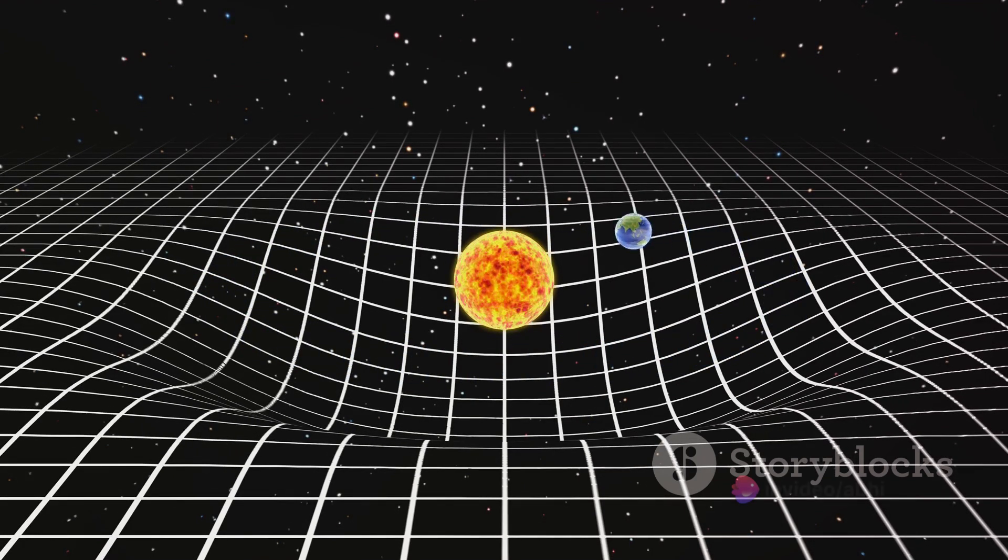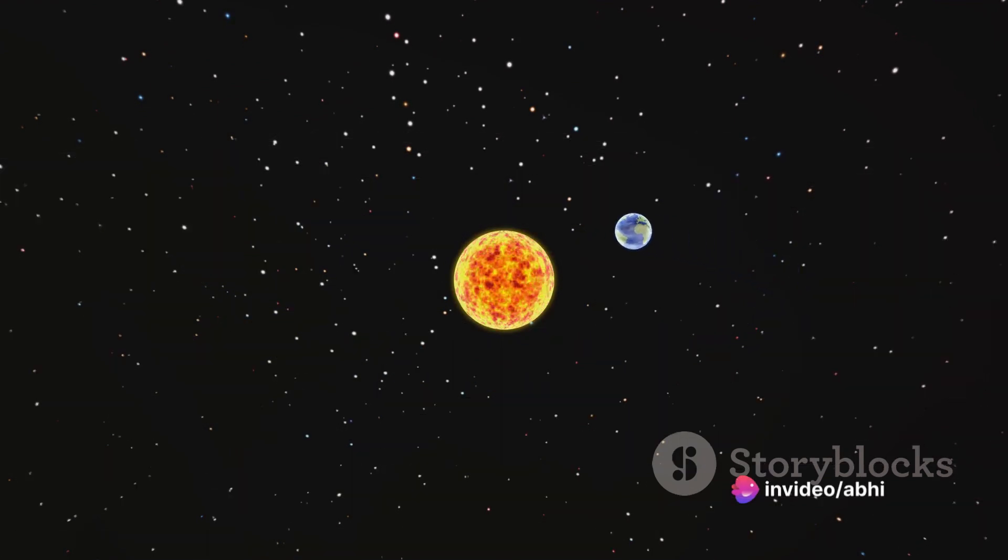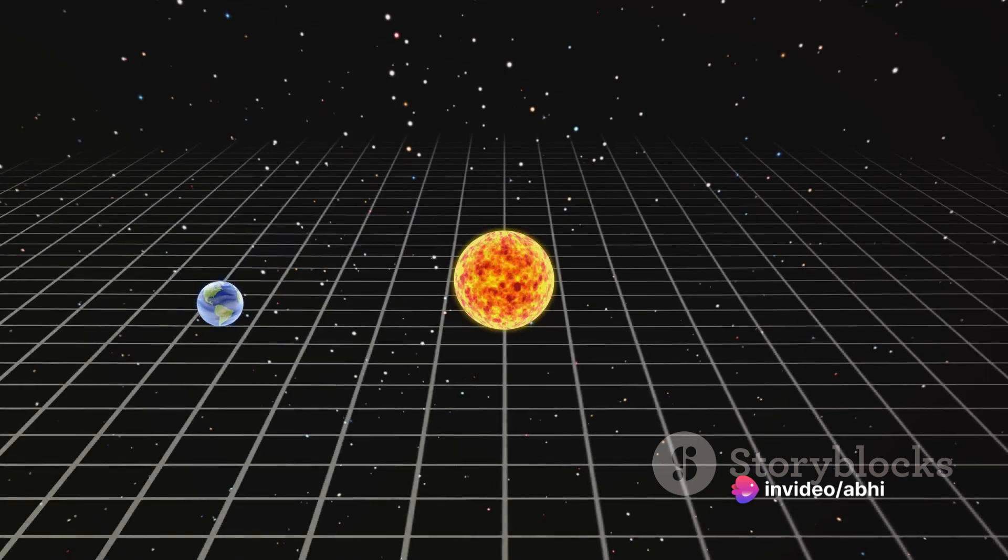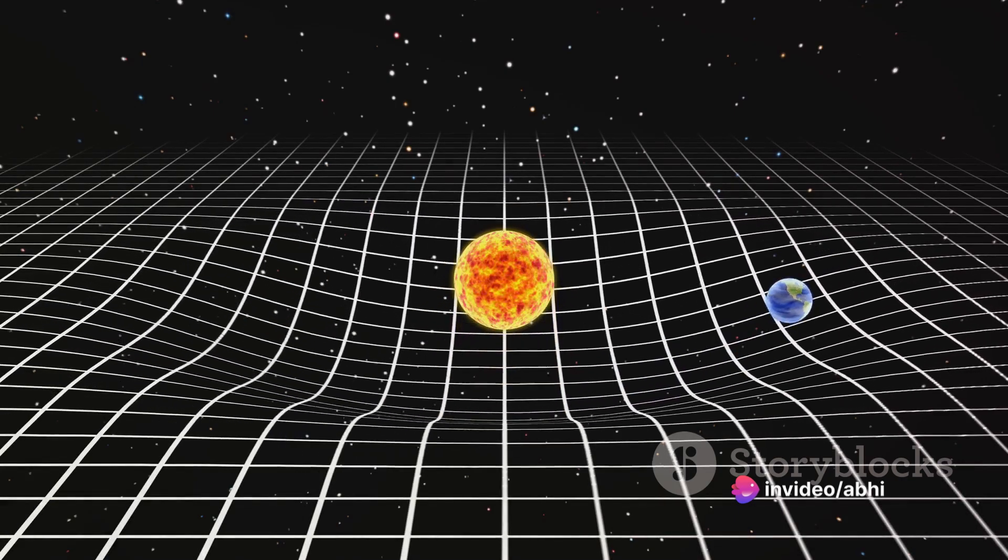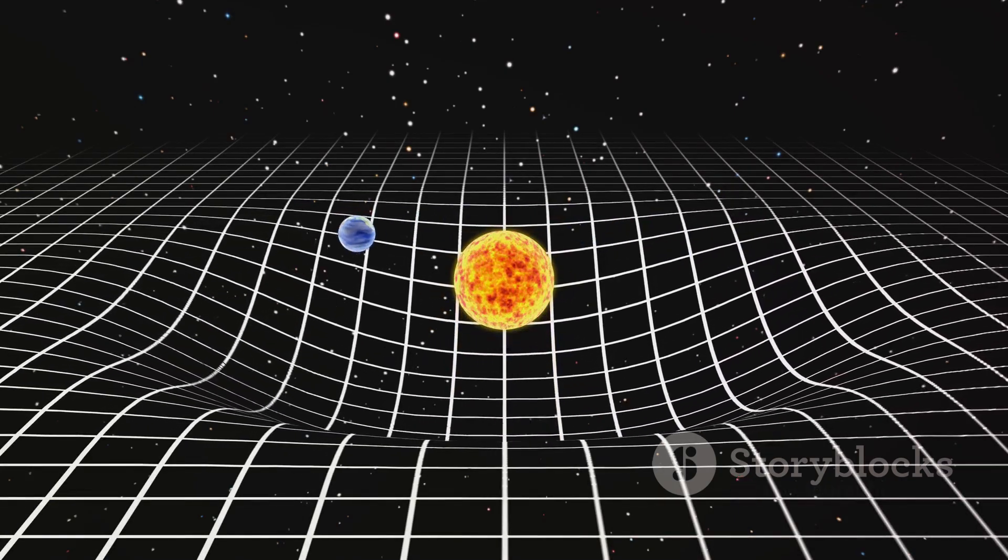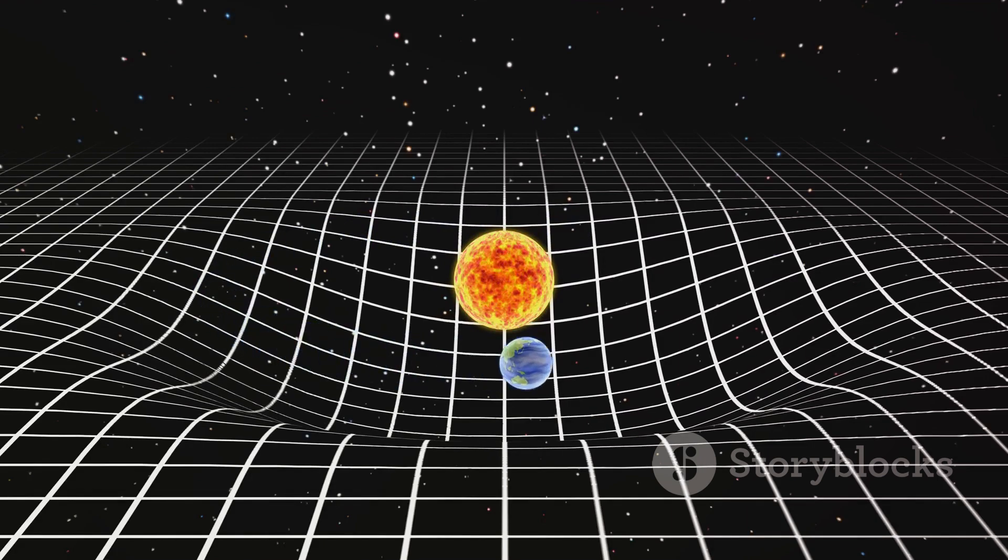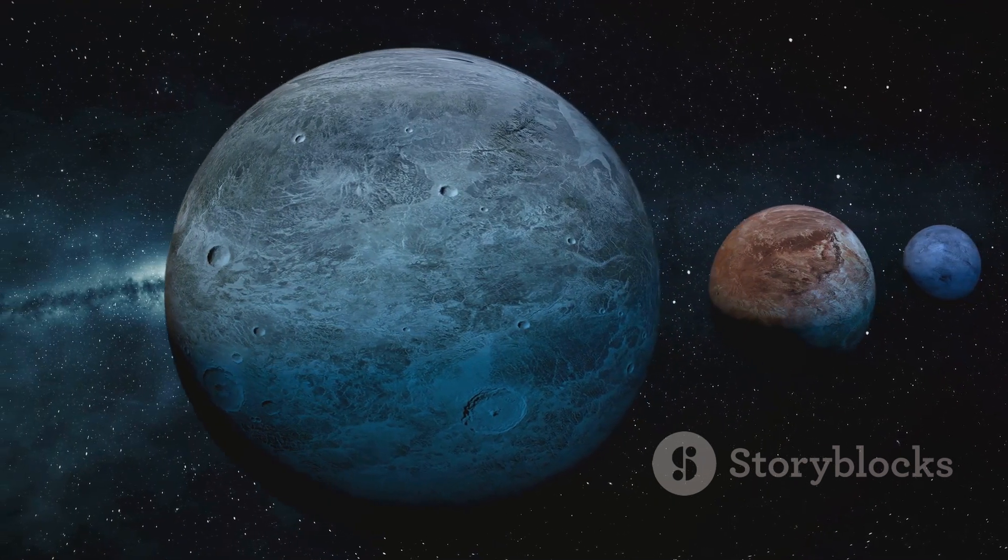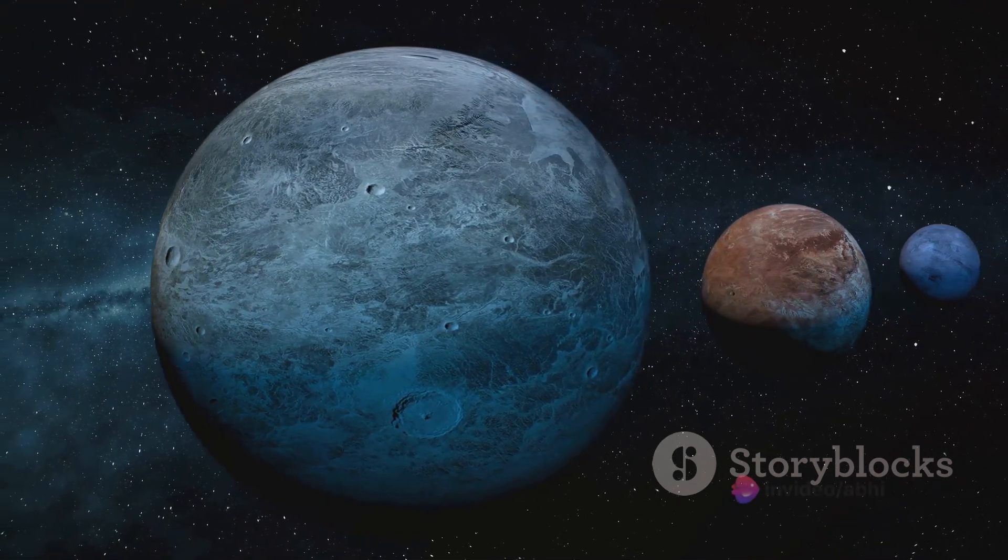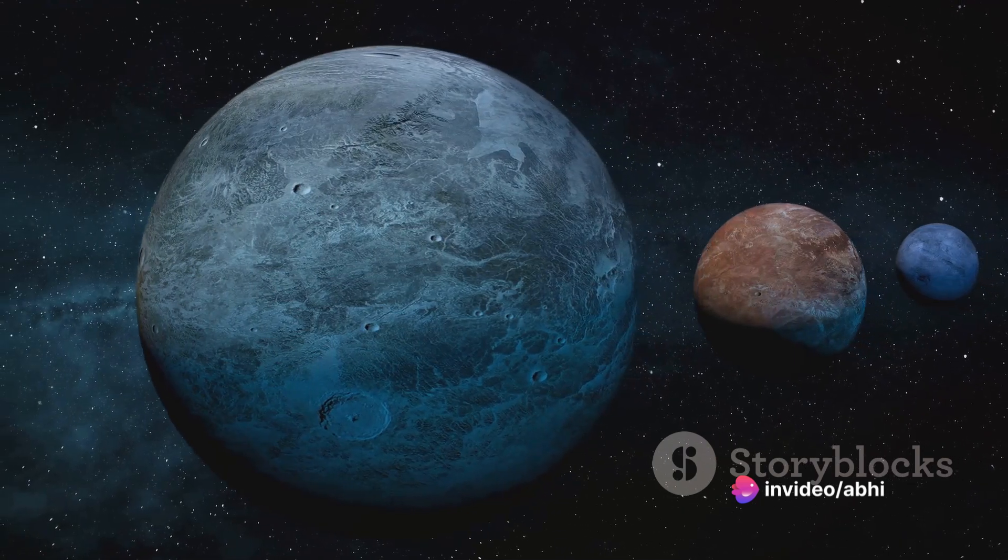Contrarily, when the planet is further from the Sun, the gravitational pull decreases. This distance allows the planet to attempt to move in a straight line, which results in a slower orbit speed. However, the Sun's gravity still prevents it from shooting off into space.